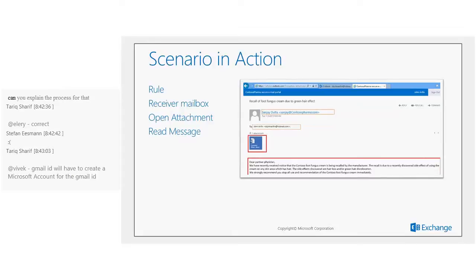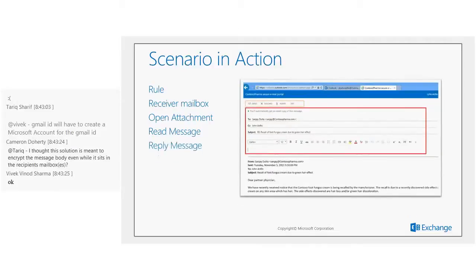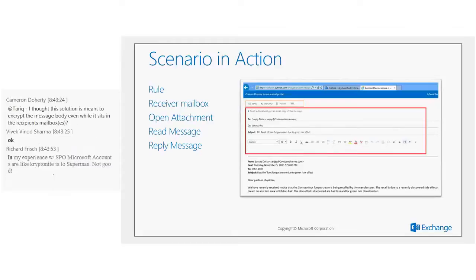Once you can view the message, the experience is easy to use because it has the same look and feel as Outlook Web App. When replying, you see the same controls as in Outlook Web App. Importantly, if the message is forwarded or replied to, that message also remains encrypted. The entire message thread is encrypted, and the recipient does not need an Office 365 license to forward or reply.